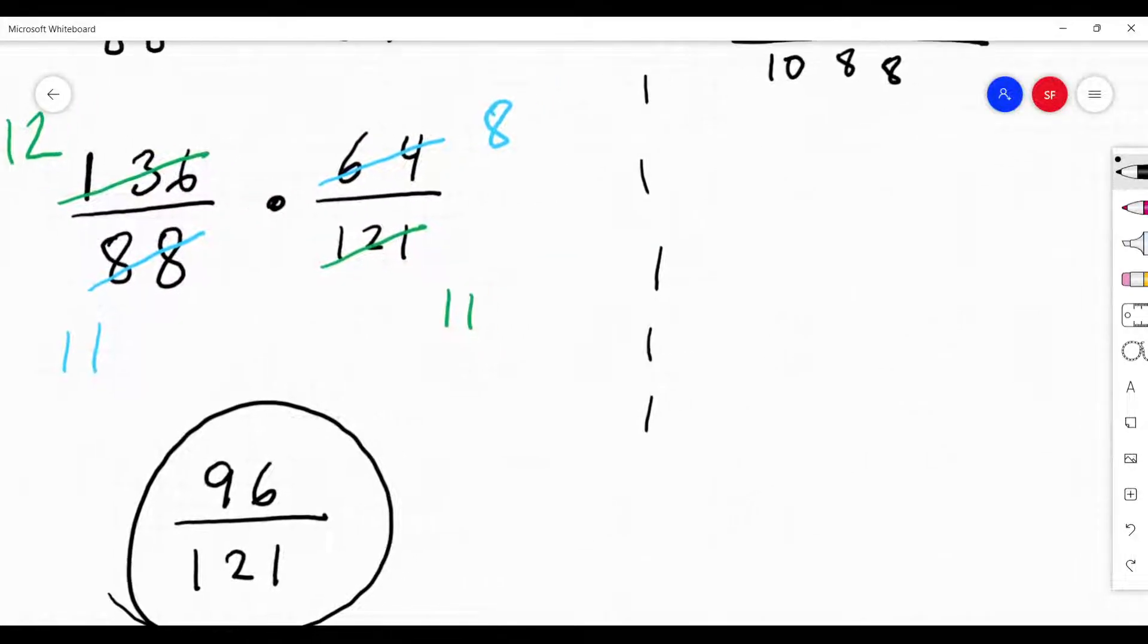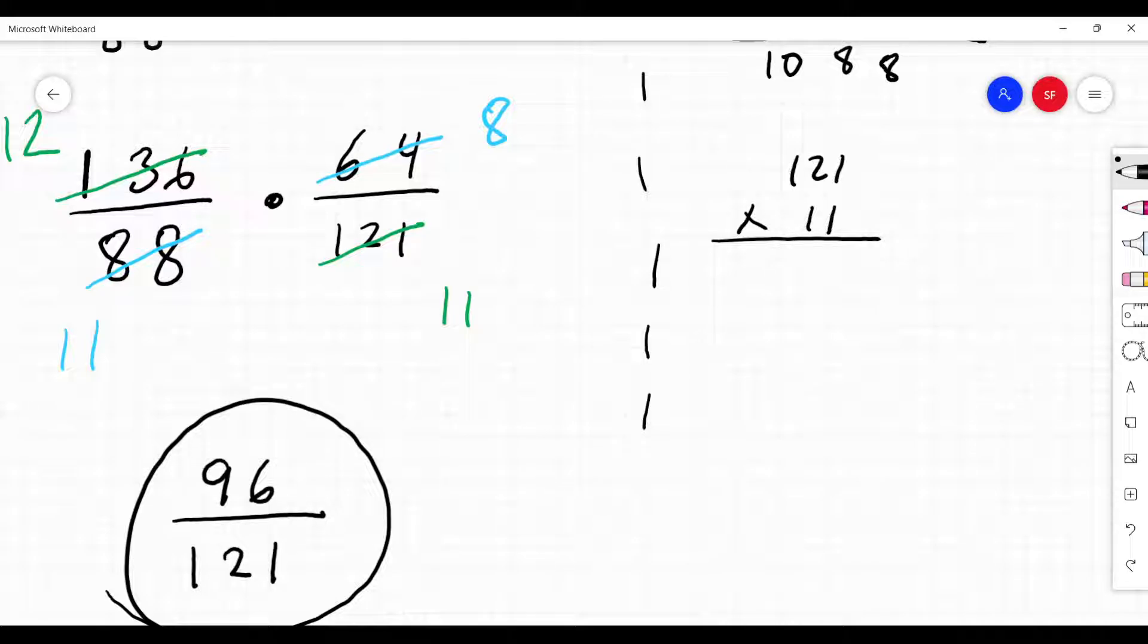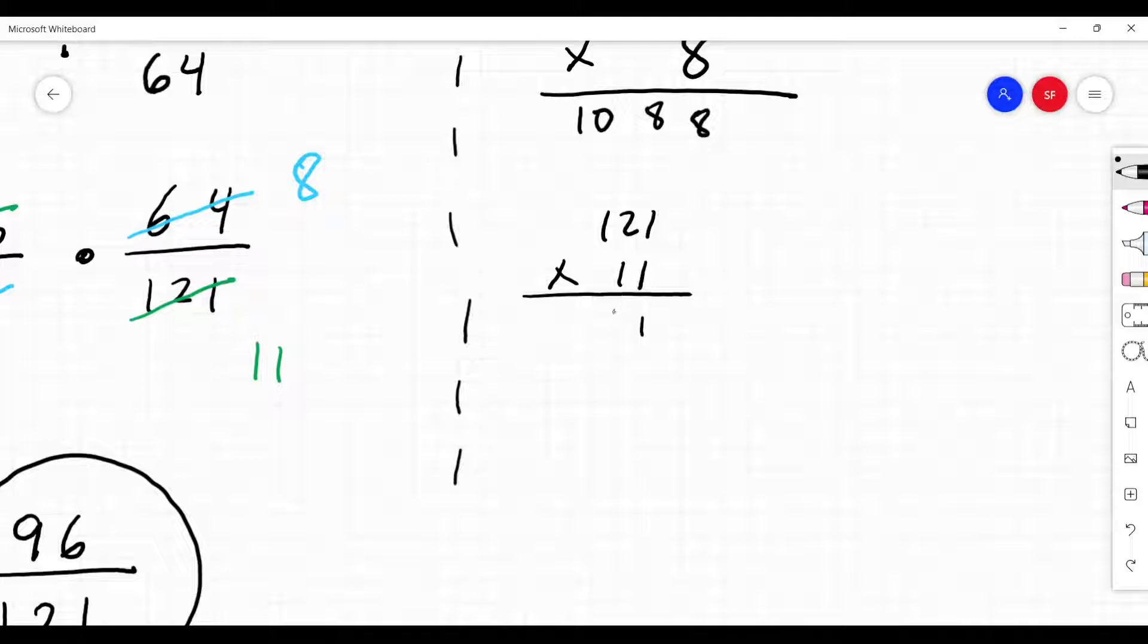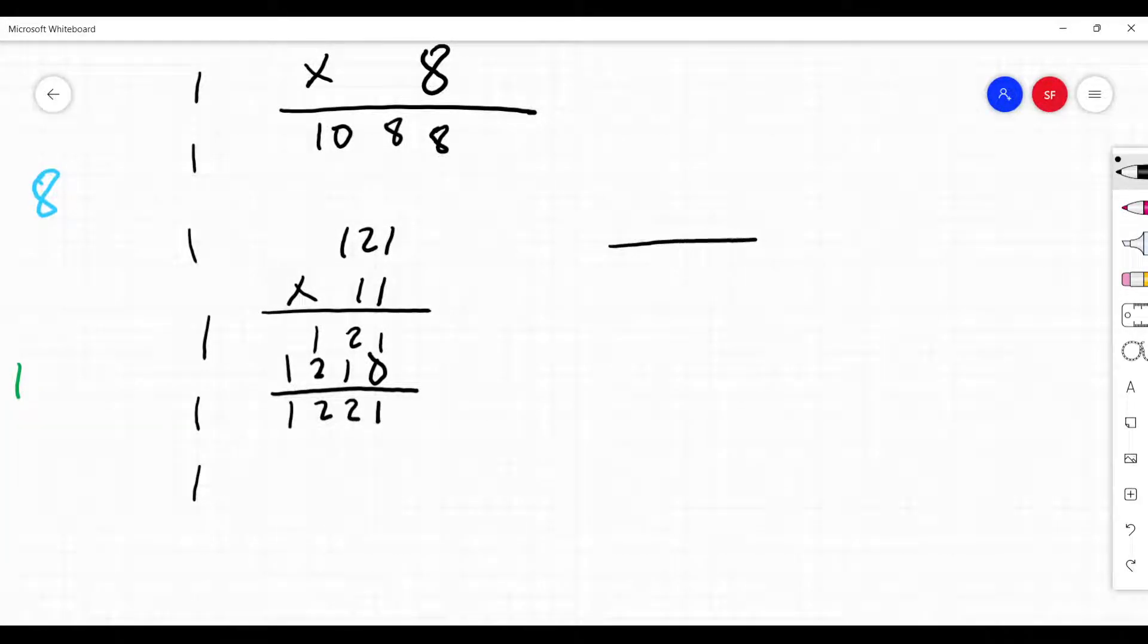And then we would have done 121 times 11. This one's easy, right? 1 times 1 is 1, 1 times 2 is 2, 1 times 1 is 1. We put a 0, and then 1, 2, 1 again. Then we add those up: 1 plus 0 is 1, 2 plus 1 is 3.